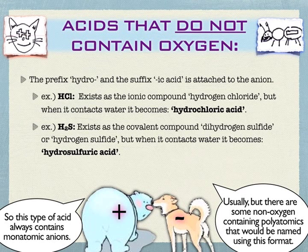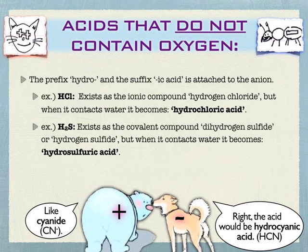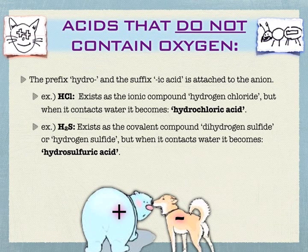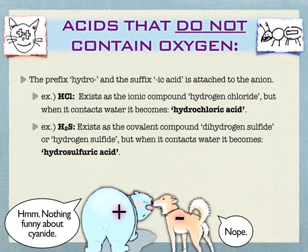Occasionally you will run into a polyatomic that doesn't contain oxygen, and in that case it would also get named this way. For example, cyanide is CN⁻ — a polyatomic that doesn't contain oxygen — so it would get named hydrocyanic acid. Don't assume every polyatomic is going to be named the same way: if it doesn't contain oxygen, it gets the prefix hydro.